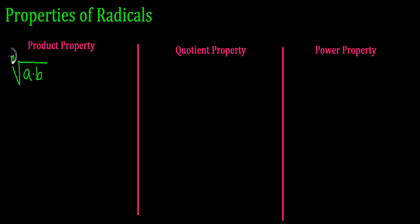any root — that's why I write n, that means any root. The square root, the cube root, the fourth root — n can be any number. It says that the root of a product is the same exact thing as the product of the roots.